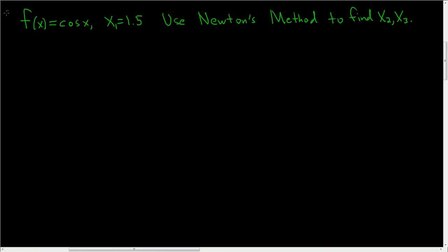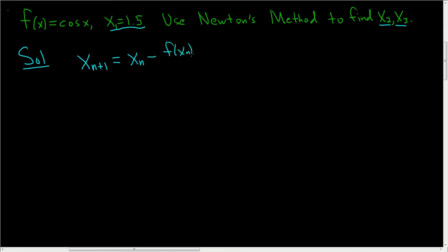We have f of x equal to cosine x, and x₁ is equal to 1.5. We want to use Newton's method to find x₂ and x₃. The first thing we should do is write down the formula for Newton's method: x sub n plus 1 is equal to x sub n minus f of x sub n divided by the derivative of f evaluated at x sub n.